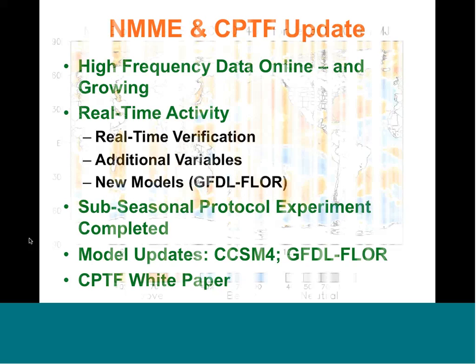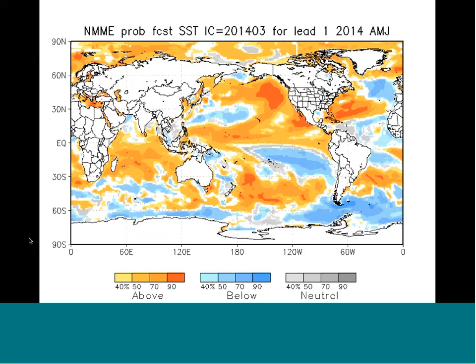In terms of real-time output, for those who don't check the website frequently, we are putting out probabilistic forecasts based on an order of a hundred member ensemble. This is the most recent one-month lead probabilistic forecast for sea surface temperatures for April-May-June, showing the probability for above normal, below normal, and near neutral. There is a relatively high probability of SSTs being above normal in the tropical Pacific, but also in much of the Atlantic.